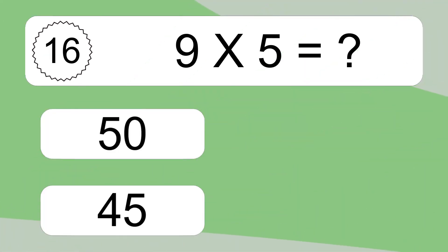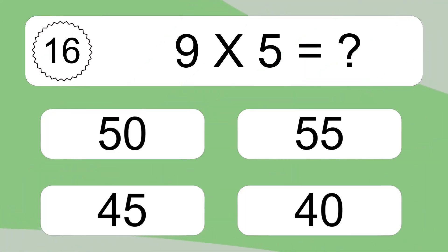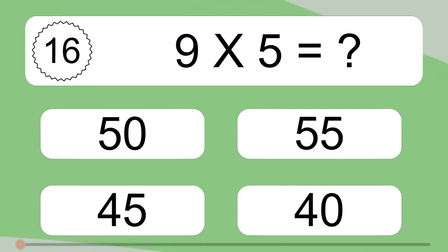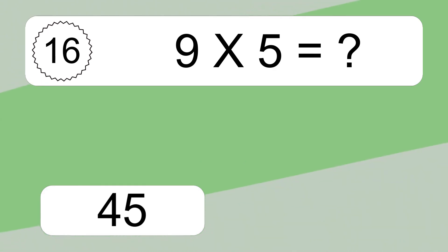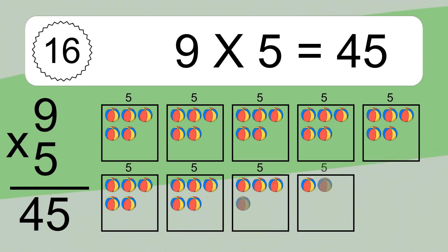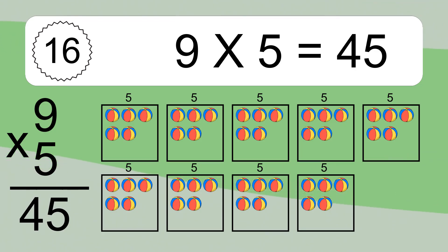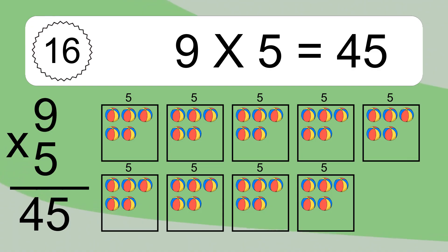9 times 5 equals what? 9 times 5 equals 45. We have 9 boxes, and each box has 5 colorful balls inside. If you count all the balls in all the boxes together, you will have 9 times 5 balls. This equals 45 balls.